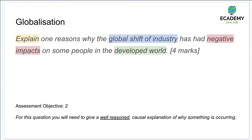Make sure you have a piece of paper out and you've written down this question, because you're going to use some highlighters and highlight the key elements as I've done on this slide here. 'Explain' is a trigger word, and we need to focus on the specificity of global shift and its negative impacts specifically on the developed world.